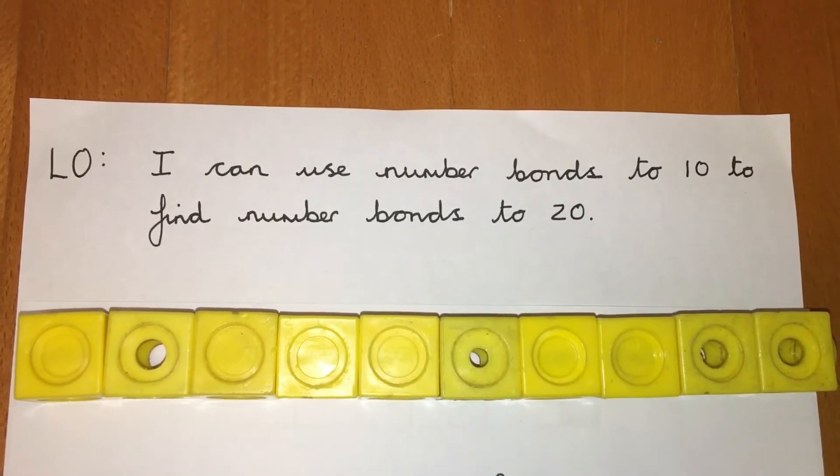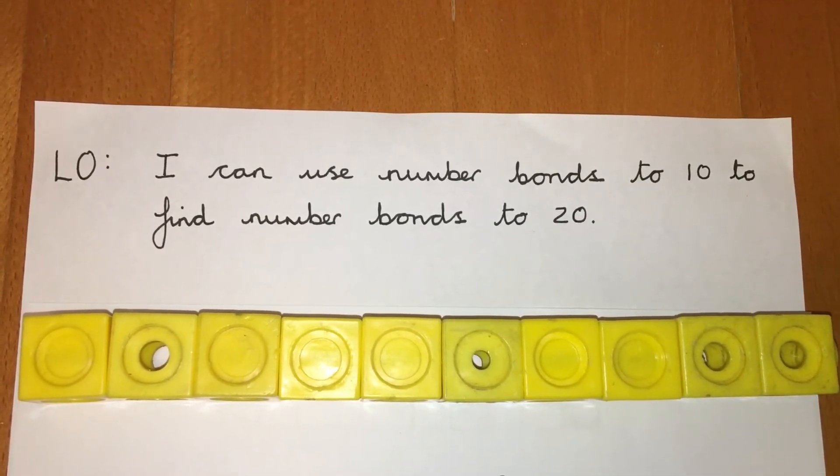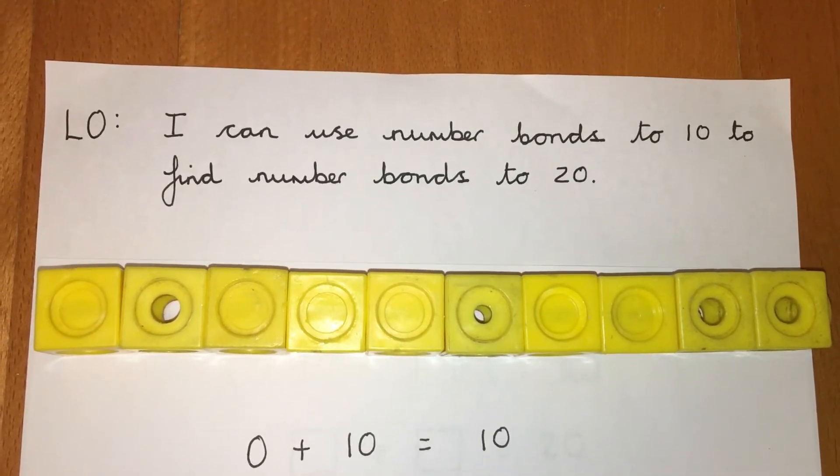So what do you see here? We've got a stick of 10. So what number bond to 10 does that represent? Well, 0 plus 10 equals 10.